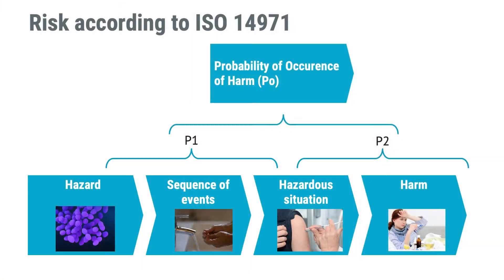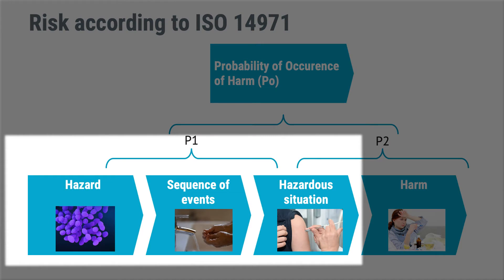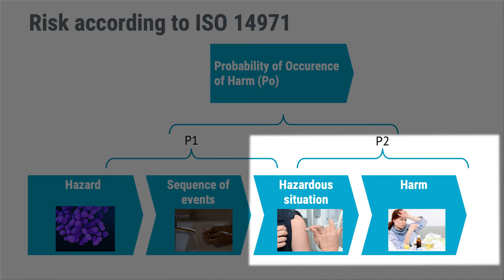Now let's continue with the probability of software failure and get that terminology right. Software risk management is about how to reduce the likelihood that the software can contribute to hazardous situations, which is all about reducing P1. Throughout this video and in other videos, when I talk about software risk management, P1 is what I have in mind.